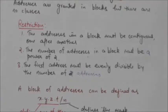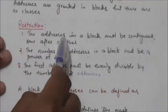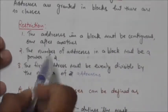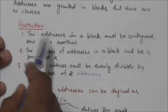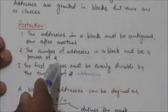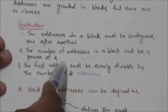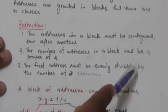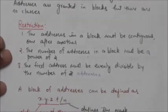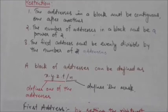The first restriction is that the addresses in a block must be contiguous, that is one after another. The second restriction is that the number of addresses in a block must be a power of two. And the third restriction is that the first address must be evenly divisible by the number of addresses.